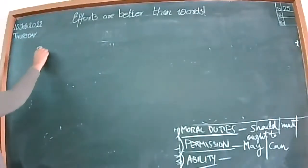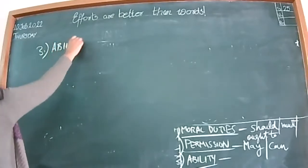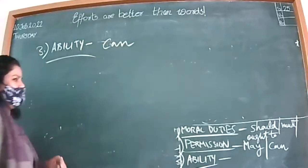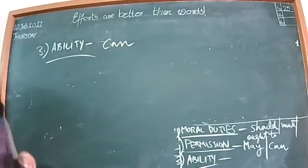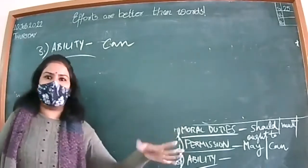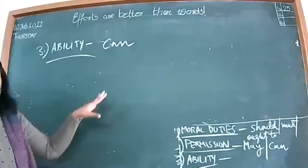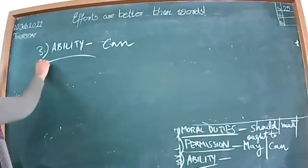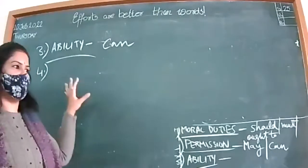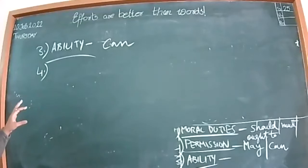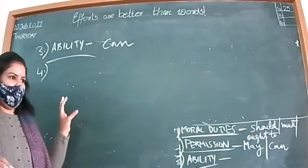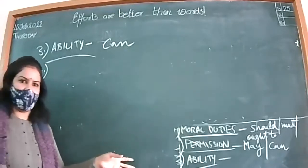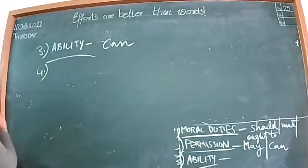The third category is ability. When we talk about the ability to do something or not, we use can. For example: 'I can speak three languages,' 'I can run very fast,' 'He cannot swim.' Whenever we talk about a person's ability, we use can. This will help you in spoken English as well, and modals are also part of your writing skills and grammar.